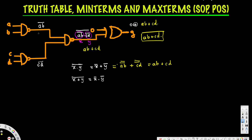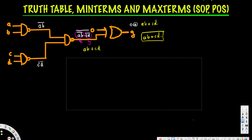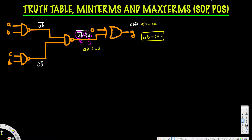Let's create the truth table. We have four different variables: A, B, C, D. With four variables, we are going to have 2⁴ = 16 different combinations. Let me create the table with columns A, B, C, D.